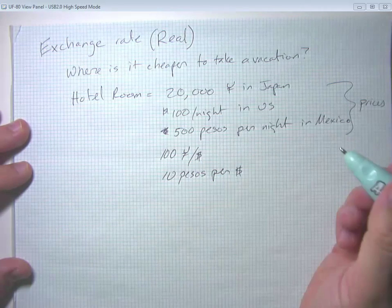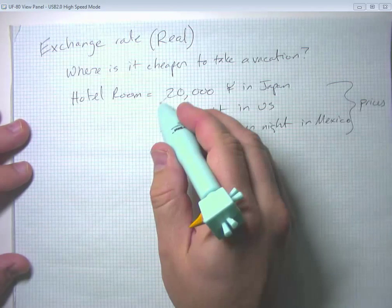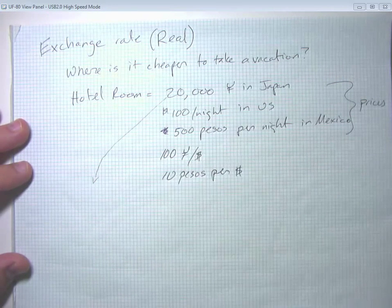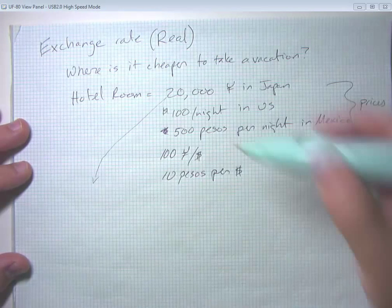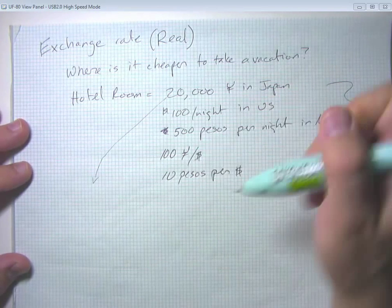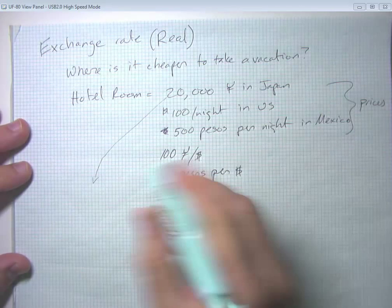So what you can see is that, well, 20,000 yen is 20,000 divided by 100 or $200.